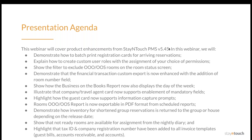We'll demonstrate how inventory for shortened group reservations is returned to the group or house depending on the release date, show that not ready rooms are available for assignment from the nightly diary, and highlight that tax ID and company registration number have been added to all invoice templates, including guest bills, accounts receivables, and accounts. We will have a short Q&A session at the end of the presentation. Feel free to submit questions throughout and we will answer them in the order they are received at the end.